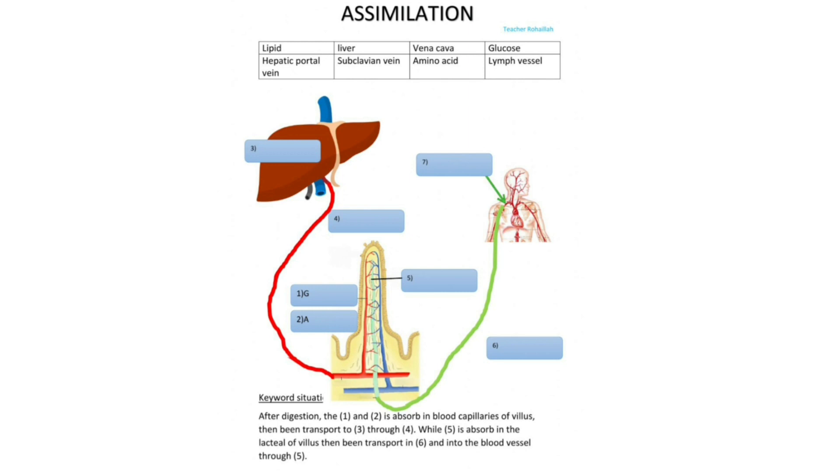While part 5 is absorbed in the lacteal of villi and being transported in part 6, that is into the blood vessels. Here you can see one structured diagram to make you more understand, more understandable.